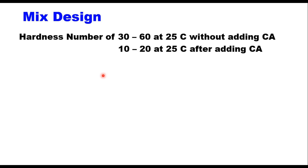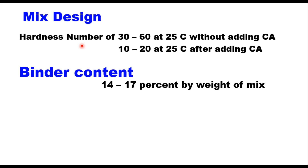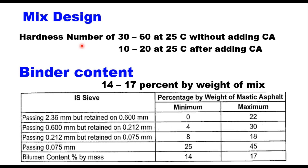Mix design for mastic is based on hardness number. The hardness number should be 30 to 60 at 25 degrees centigrade without adding coarse aggregate. After adding coarse aggregate, its value should be in the range of 10 to 20 at 25 degrees centigrade. Binder content is fixed based on hardness number but should be in the range of 14 to 17% by weight of mix. This depends upon the gradation of filler and fine aggregate, and minimum and maximum binder content values are suggested in IRC 107.